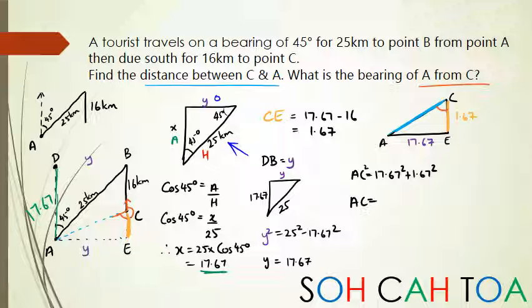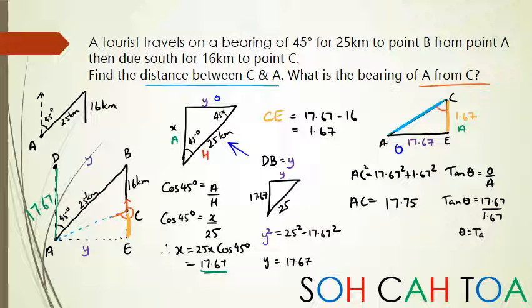As for the angle, I need to do opposite and adjacent, so that's going to be opposite, that's going to be adjacent. I'm using tan. Tan theta equals opposite over adjacent. Tan theta equals 17.67 divided by 1.67, so theta equals inverse tan of 17.67 over 1.67. Theta is inverse of that, so shift tan divided by 1.67, so I get an angle of 84.6 degrees.